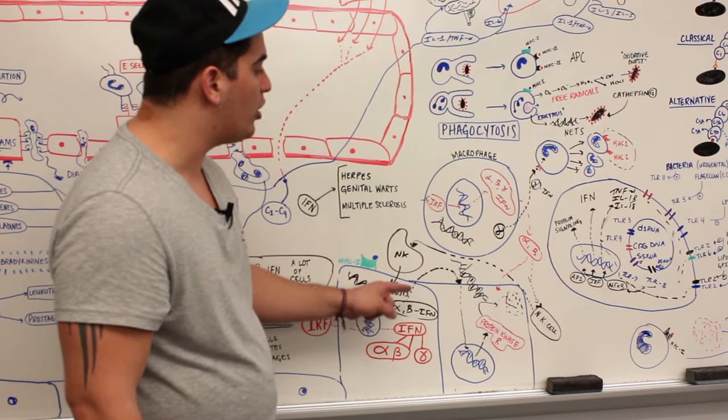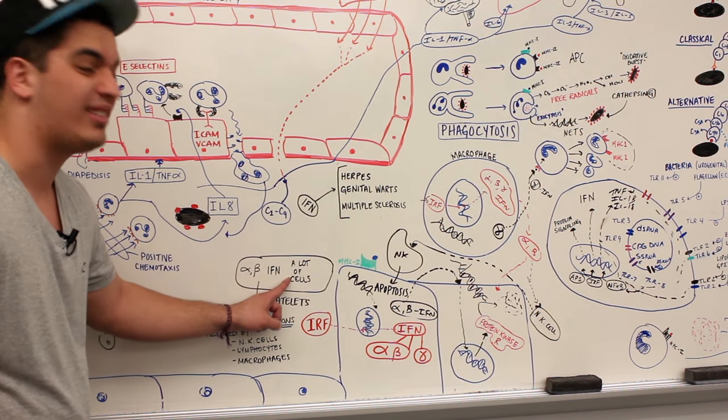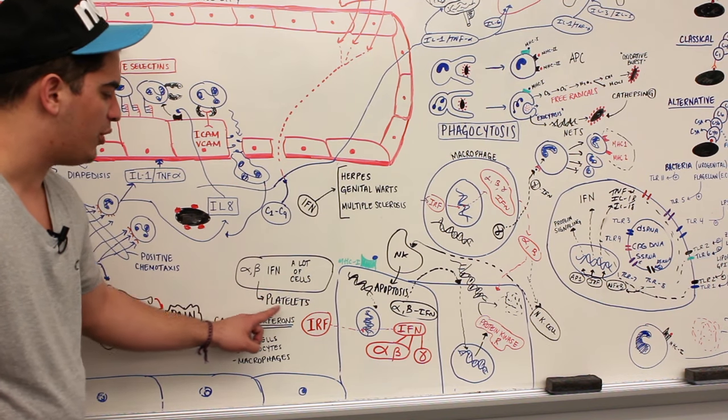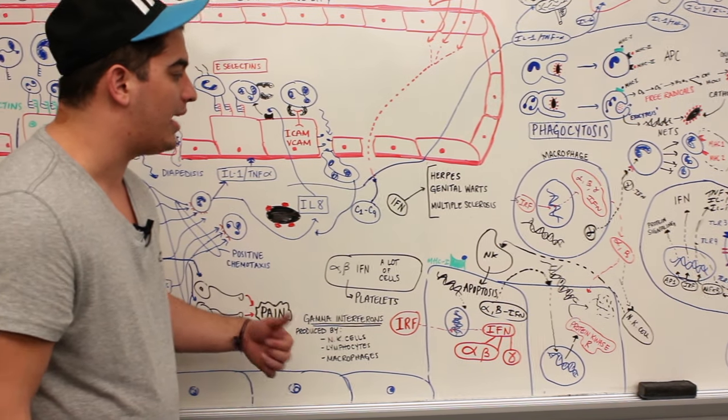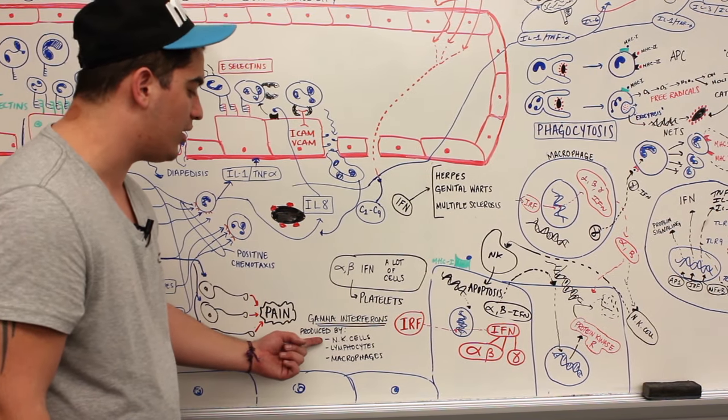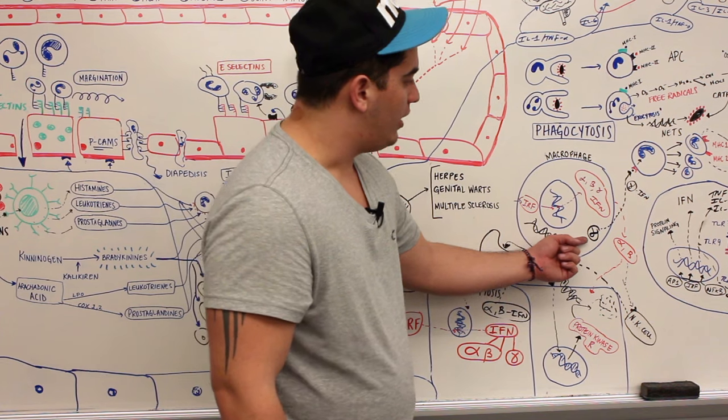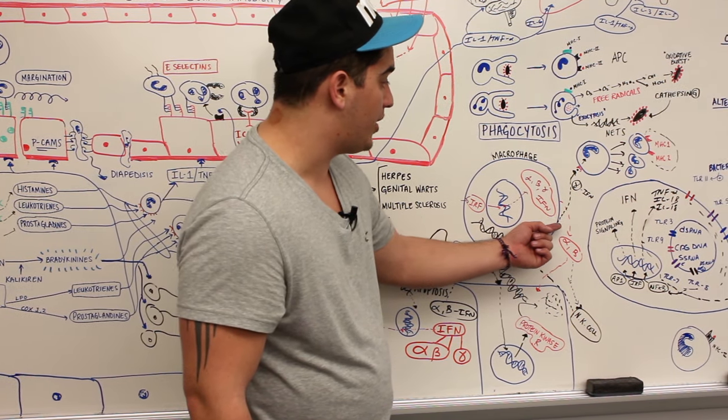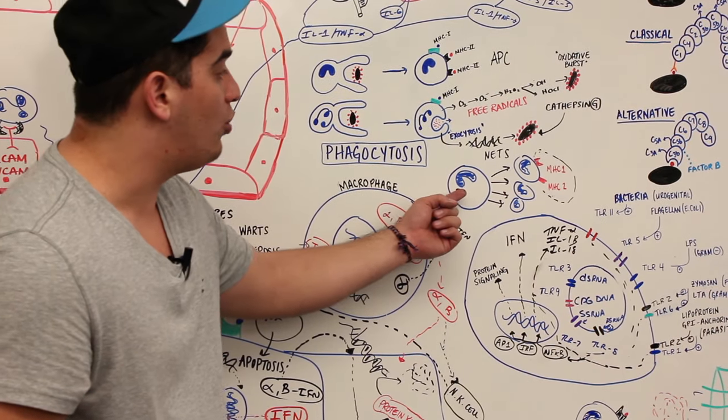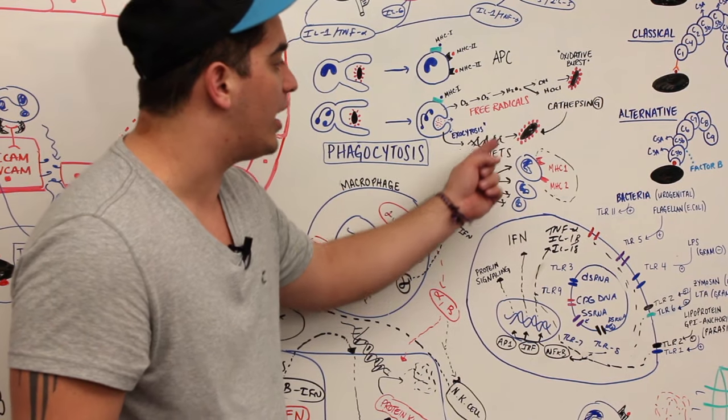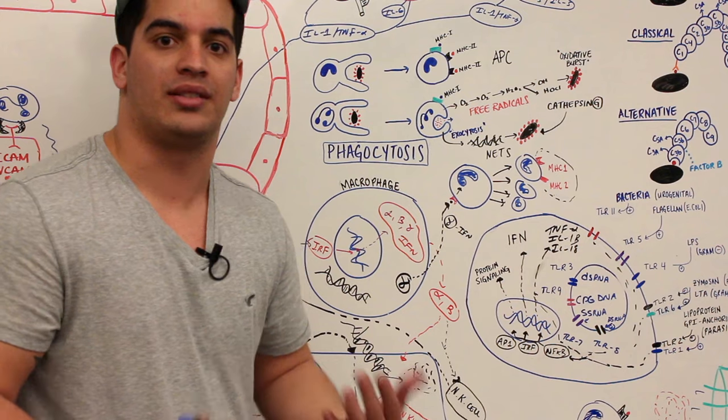What do gamma interferons do? The only ones who really secrete gamma interferons are natural killer cells, lymphocytes, and macrophages. Alpha and beta interferons are produced by tons of different cells. Beta interferons are usually made by platelets. Gamma interferons are made by natural killer cells, lymphocytes, and macrophages. These gamma interferons activate other macrophages, cause them to proliferate, get bigger, get hungrier, and increase the expression of class 1 and class 2 molecules, all designed to enhance the inflammatory response.